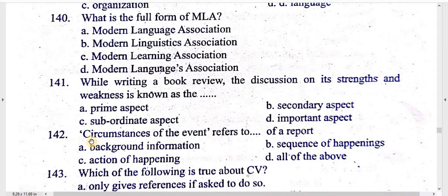Circumstances of the events refers to which part of a report? Background information, sequence of happening, action of happening, all of the above.